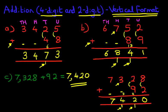It really is very simple. Have a practice and you'll soon get the hang of it. So that is the addition of 4-digit and 2-digit numbers using the vertical format.